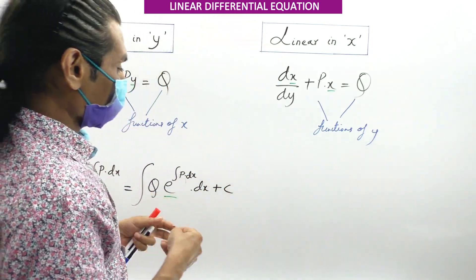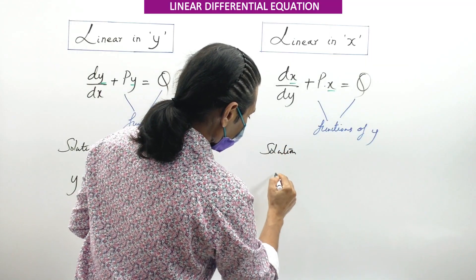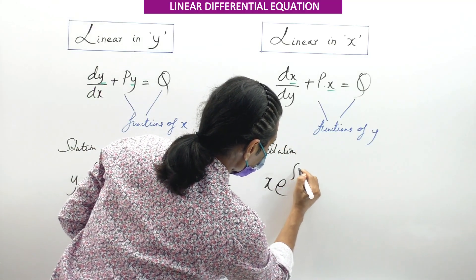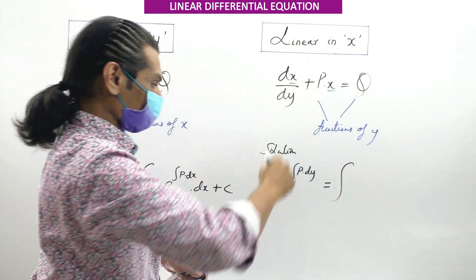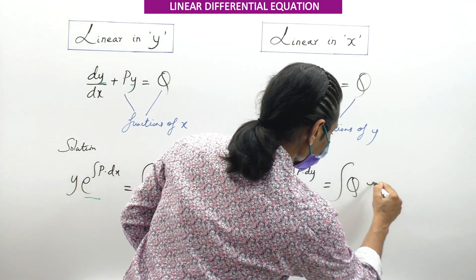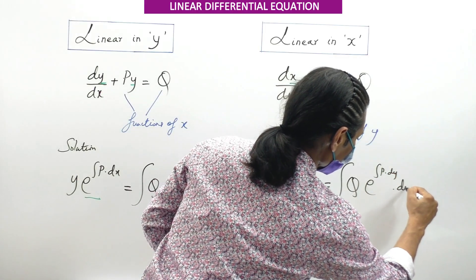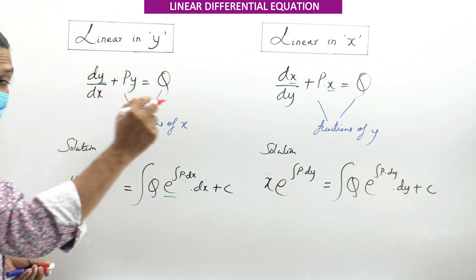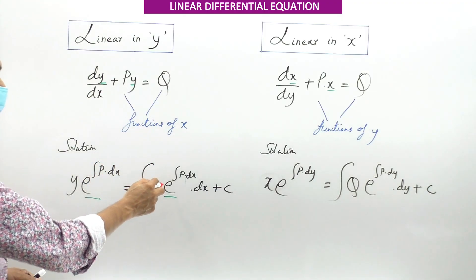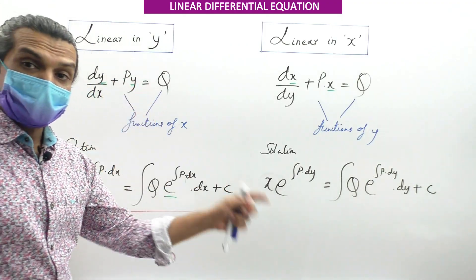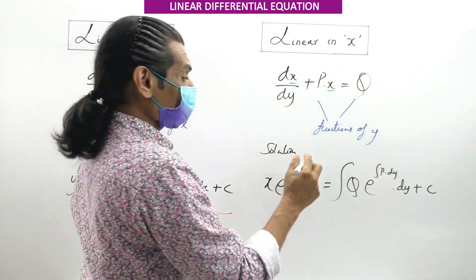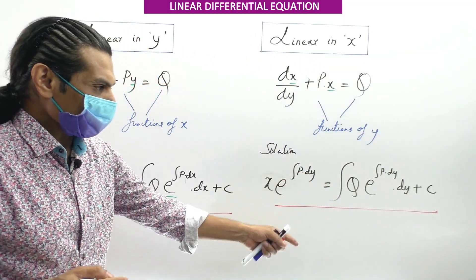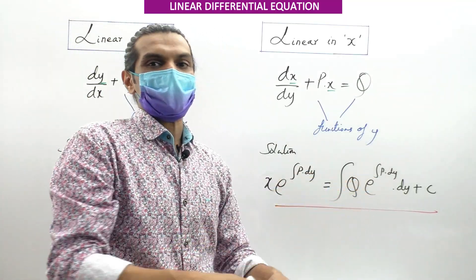For Linear in X, the solution is: X · e^(∫P dy) = ∫[Q · e^(∫P dy)] dy + C, where C is the constant. Compare this with Linear in Y: Y · e^(∫P dx) = ∫[Q · e^(∫P dx)] dx + C. For Linear in X, find ∫P dy first, substitute, integrate with respect to y, and get the solution.